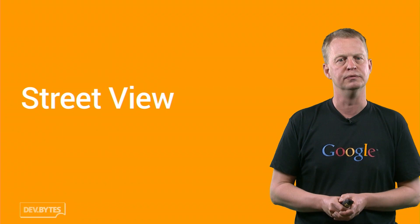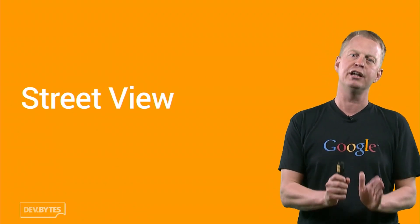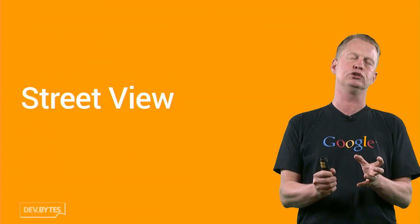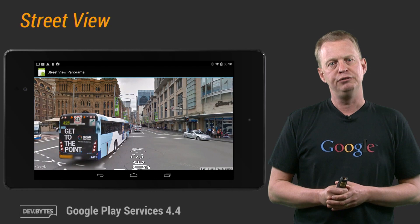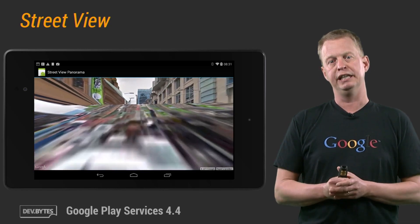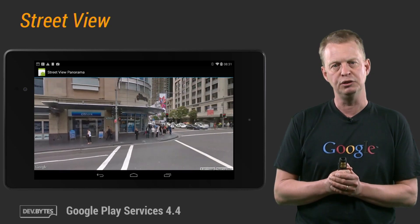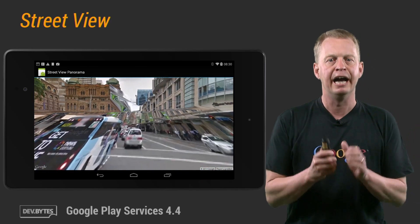Moving on — ladies and gentlemen, we've got a big announcement to make. Let's welcome Street View to the Google Maps Android API with a round of applause. You can now embed Street View imagery into an activity, enabling your users to explore the world through panoramic 360-degree views, programmatically control the zoom and orientation of the Street View camera, and animate the camera movements. That's a major extension — imagine all that cool stuff and what it can do to your apps.